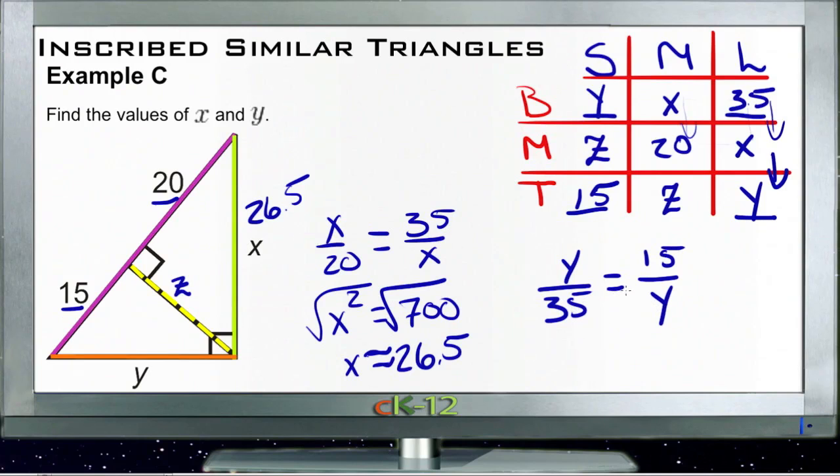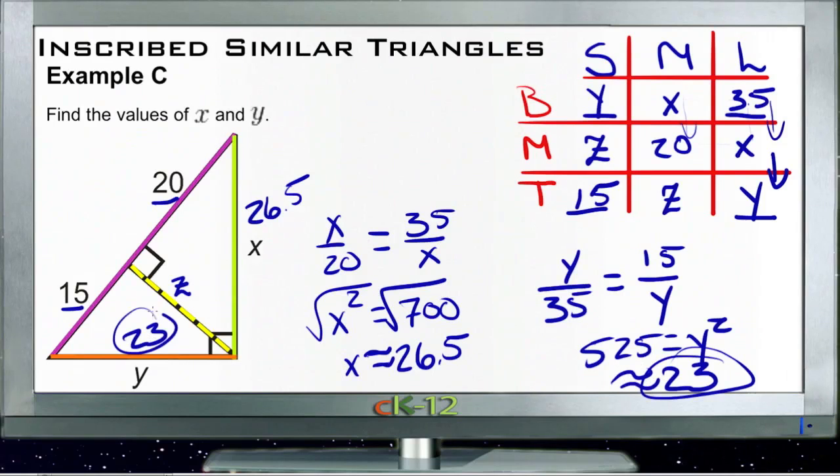So we got 35 times 15, that's 525, and that's equal to y squared. And the square root of 525 is 23, approximately—round it a little bit there. So this side is 23, and we're done.